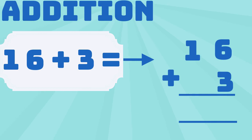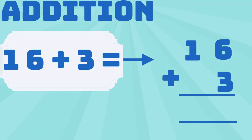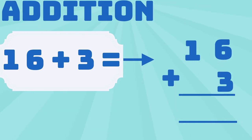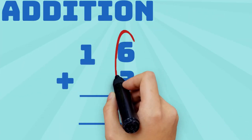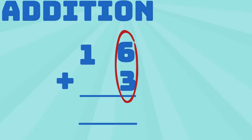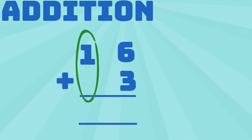It could also be written with 16 on the top, while 3 is under the 6. You start by calculating 6 plus 3, then 1 plus 0.